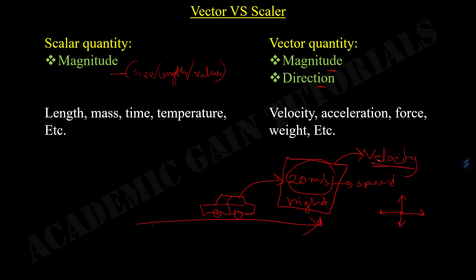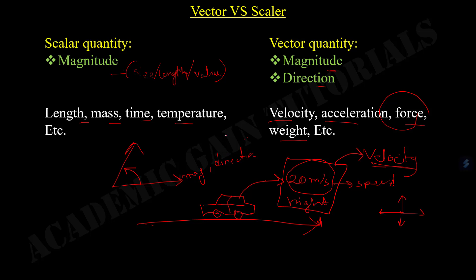Velocity is a vector quantity. Examples of scalar quantities include length, mass, time, temperature, etc., because representing this kind of information does not require any directional information. But for vector quantities like velocity, acceleration, force, and weight, we need both magnitude and direction. For example, if two forces are acting in different directions, we need to know the angle between them, as well as the magnitude and direction of each force. So force is a vector quantity.